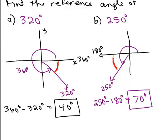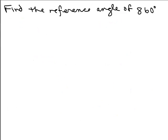Basically, if you have an angle between 0 and 360 that's not already acute, you're either going to subtract it from 180 — doing 180 minus the angle — or you're going to subtract it from 360. But if the angle is more than 360 to begin with, you first need to find the coterminal angle that's between 0 and 360.